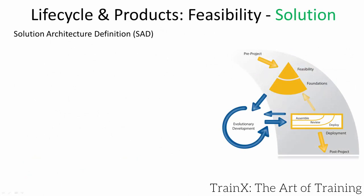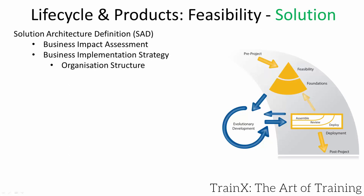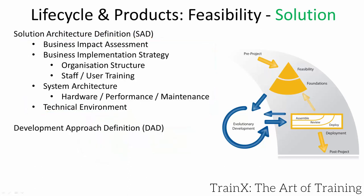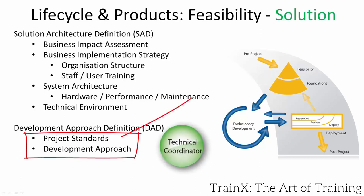The solution architecture definition captures a wide range of business and technical information — for example, how the new system will affect the business. People will need training, job roles may alter, new staff may be required, and new hardware such as servers may be needed and will require maintenance. For IT projects there will also be technical development environments requiring documentation. The development approach definition describes project standards for analysis, testing, and configuration management. The technical coordinator produces this document, and the project manager ensures development is in accordance.